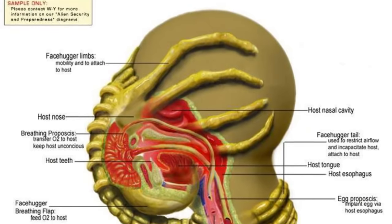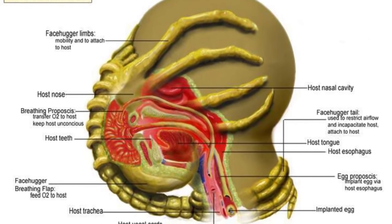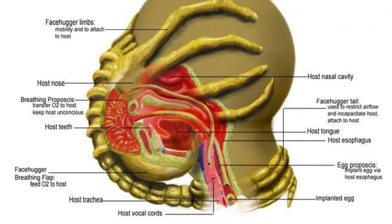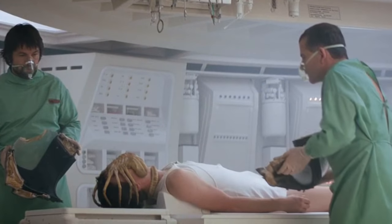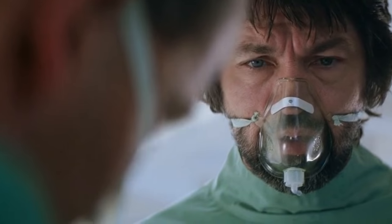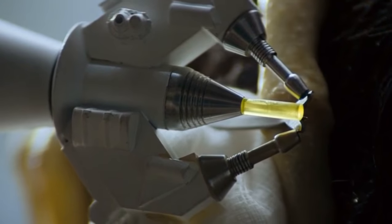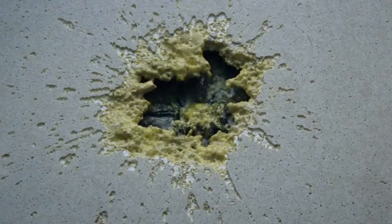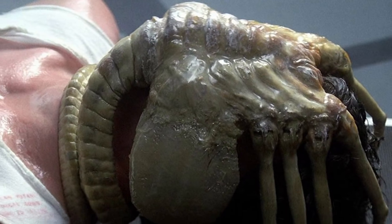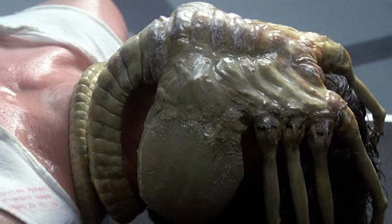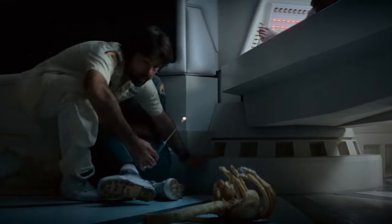Upon contact, the Facehugger administers some kind of sinus-based paralytic, leaving the host comatose, then inserts an ovipositor down the throat to place the embryo. The creature breathes for the host, and any attempts to remove the Facehugger can prove fatal — it responds by tightening its grip around the neck. If you try to cut off its finger-like legs, acidic blood will spurt out. The grip on the face is tight enough that forcibly ripping it off could tear the host's face apart. Only after the alien embryo is implanted will the Facehugger detach itself, crawl away, and die.